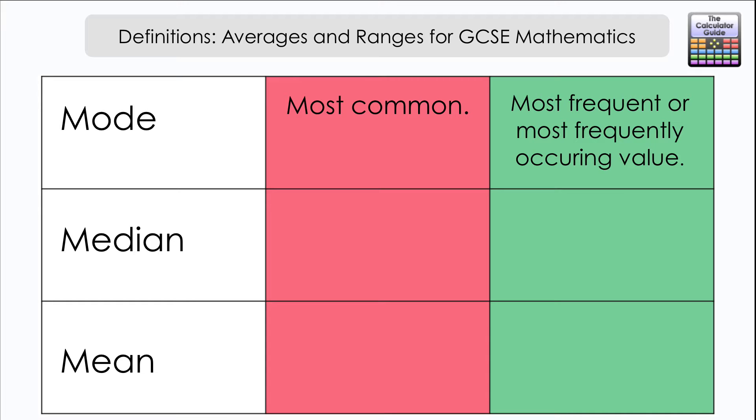It's quite important to tie that in to mode. If you're looking in a frequency table for the modal value or modal group, then it is the value or group with the highest frequency that you're looking for.